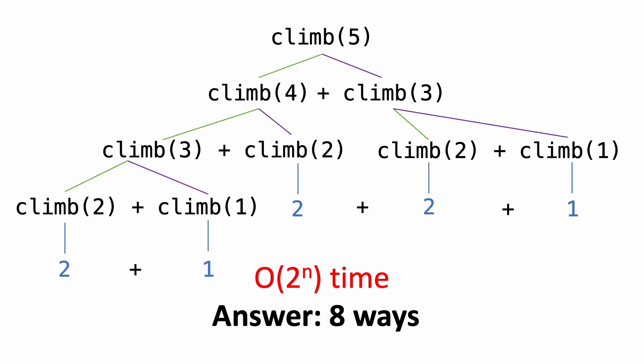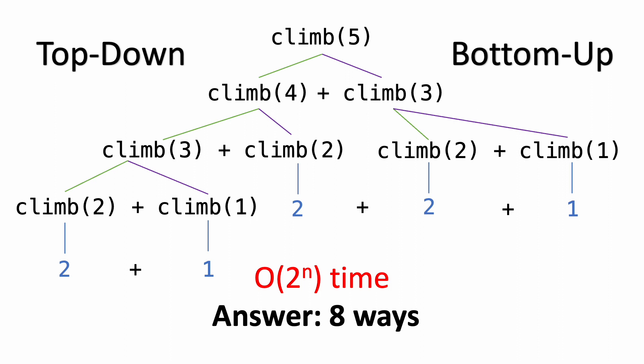How can we improve this and avoid making the same function calls over and over again? That's where dynamic programming comes in. Instead of making redundant function calls, we're going to save our previous results and reuse them. There are two ways to do this — a top-down or a bottom-up approach. I'll be focusing on the bottom-up approach in this video, since this approach allows you to eliminate the recursion entirely.